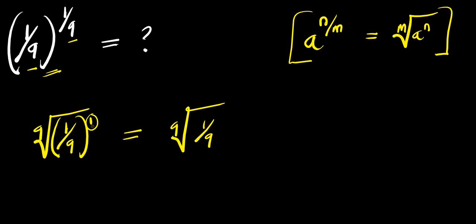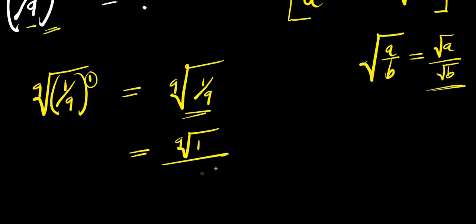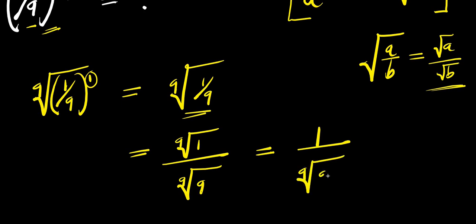Because when it is raised to the power of 1, you are going to have the same thing. So now we apply this other identity: if you have the square root of a divided by b, this equals the square root of a divided by the square root of b. We apply the same thing here — that means we are going to have the 9th root of 1 divided by the 9th root of 9.